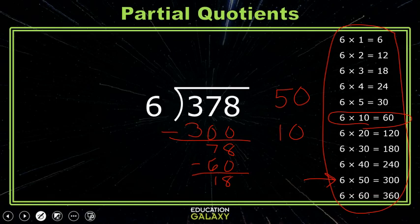I know 6 times 3 is 18, so I can write the 3 here, and when I subtract the 18, I won't have any left over. So to find my answer, I just add 50 plus 10 plus 3, which equals 63. So my answer is 63.